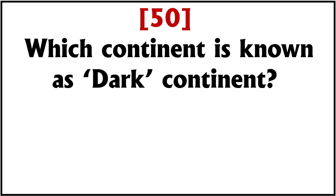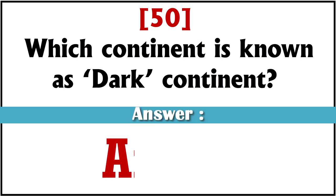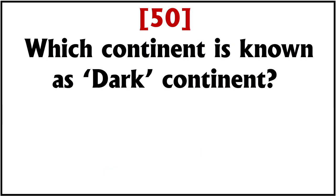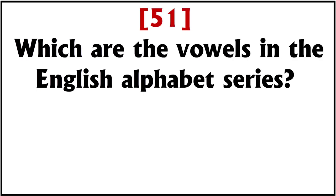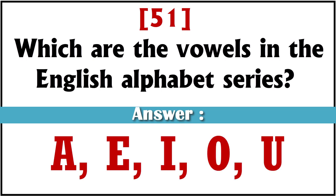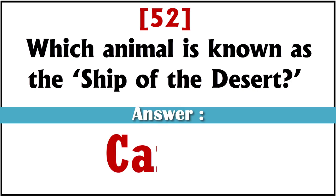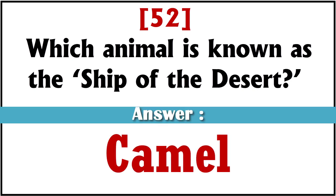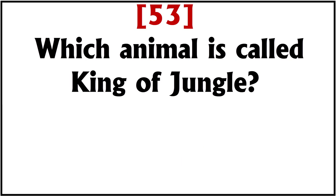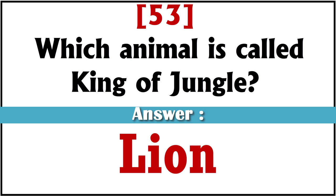Which continent is known as the dark continent? Africa. Which are the vowels in the English alphabet series? A, E, I, O, U. Which animal is known as the ship of the desert? Camel. Which animal is called king of the jungle? Lion.